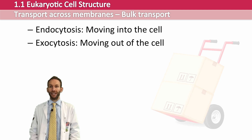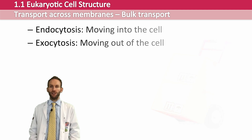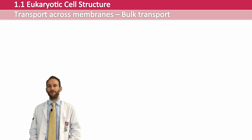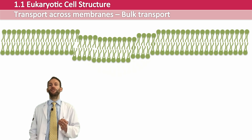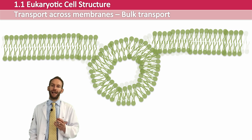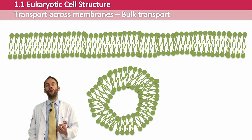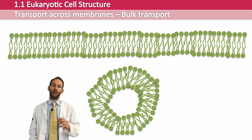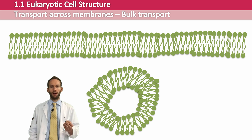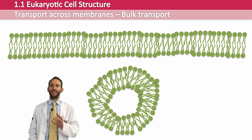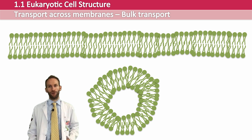Bulk transport works because of the fluid nature of the phospholipid bilayer. You can actually pinch off whole sections of the phospholipid bilayer to make vesicles within the cell, or you can actually fuse these vesicles back into the membrane to move substances out of the cell via exocytosis.